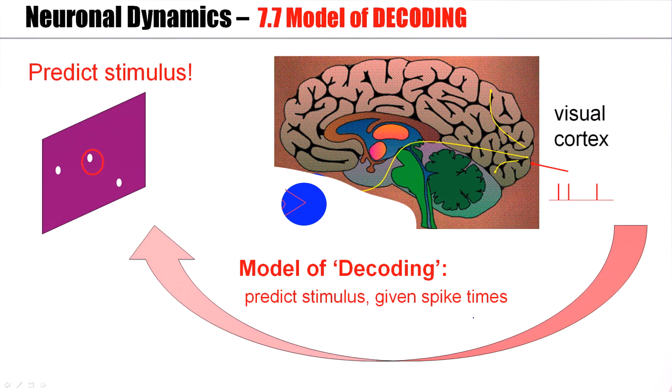Suppose, after model optimization, suppose now that we just see the spikes here. Would we be able to predict the stimulus given the observed spike times? Now, this looks like an academic problem. However, it's not.